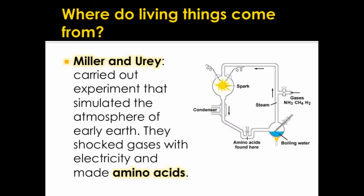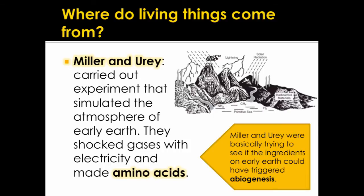Some scientists wanted to test the idea of abiogenesis. Miller and Urey were two scientists that made this contraption to the right, and they carried out an experiment that simulated the atmosphere of early Earth. They mixed together gases they thought were present on early Earth, and then they shocked them with electricity. Both the gases and the electricity are not alive, but they were able to make the building blocks of life known as amino acids. Miller and Urey wanted to figure out if lightning shocking the gases could have triggered abiogenesis — making the building blocks of life like amino acids without adding anything that was alive.